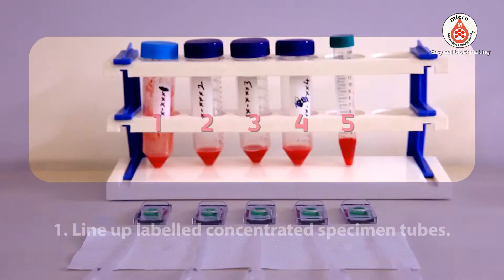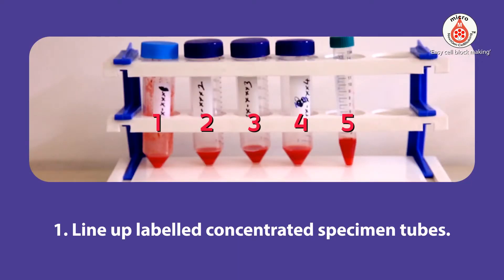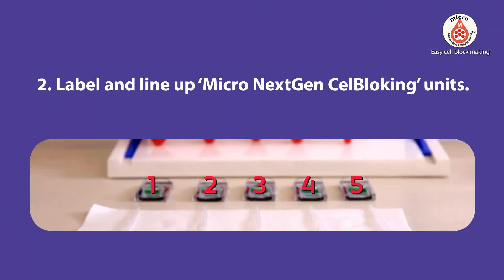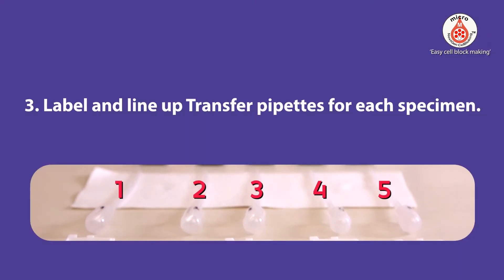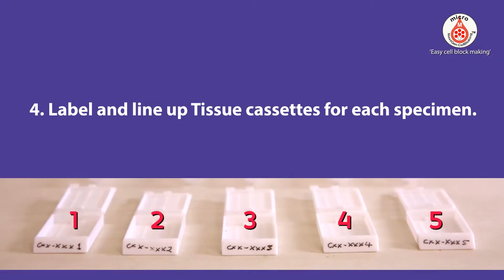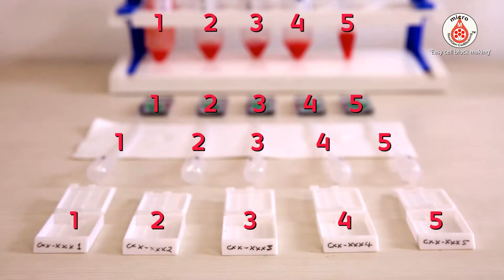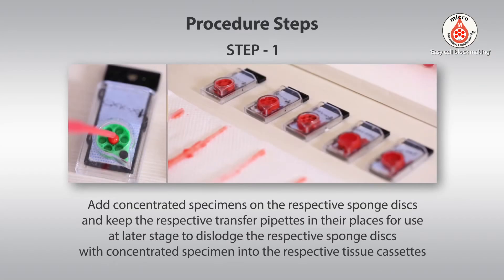Summary procedure: Line up labeled concentrated specimen tubes. Label and line up micro next-gen cell blocking units. Label and line up transfer pipettes for each specimen. Label and line up tissue cassettes for each specimen. Step 1: Add concentrated specimens on the respective sponge disks and keep the respective transfer pipettes in their places for use at a later stage.